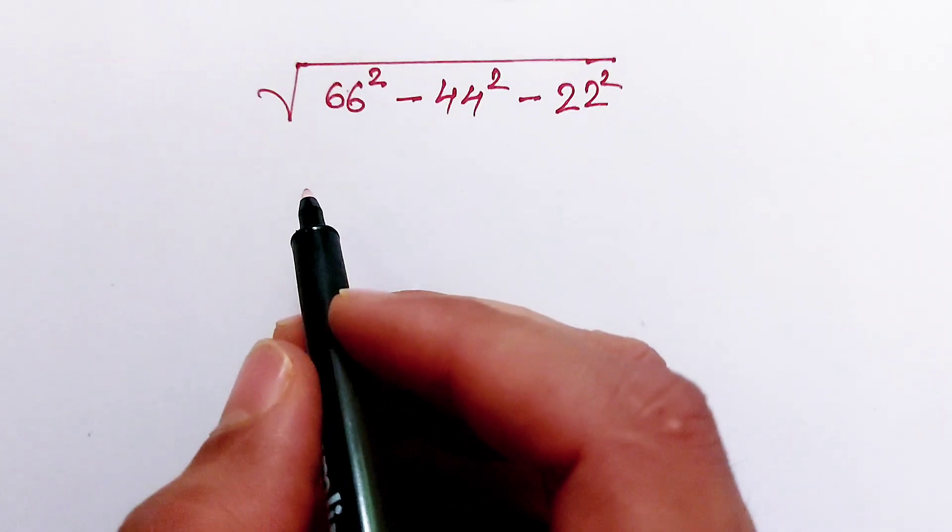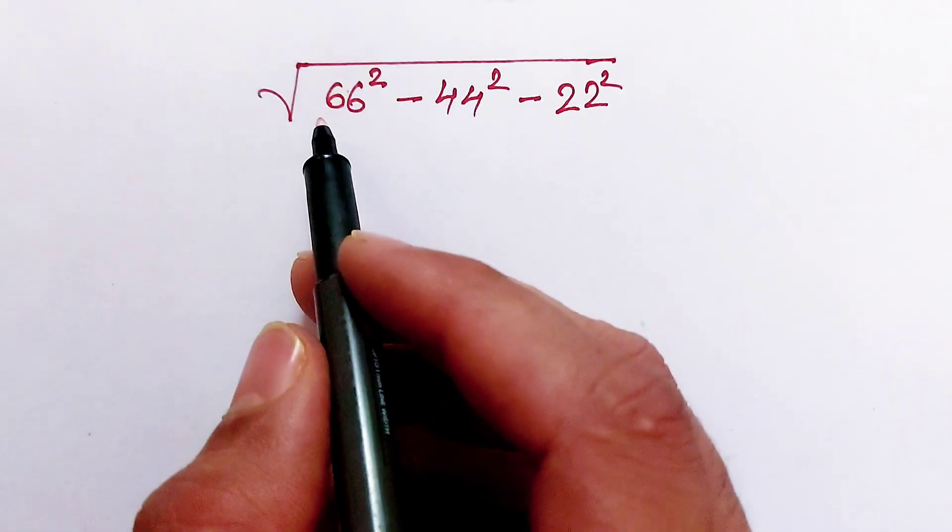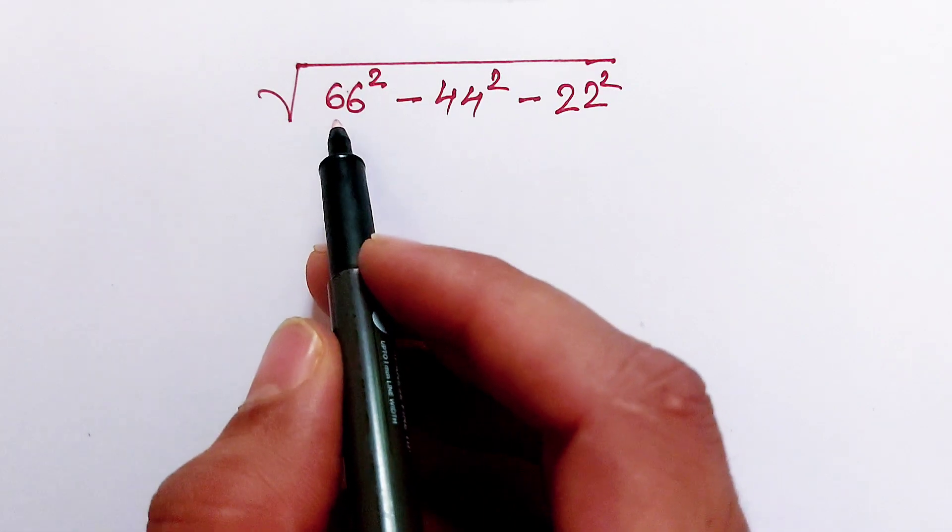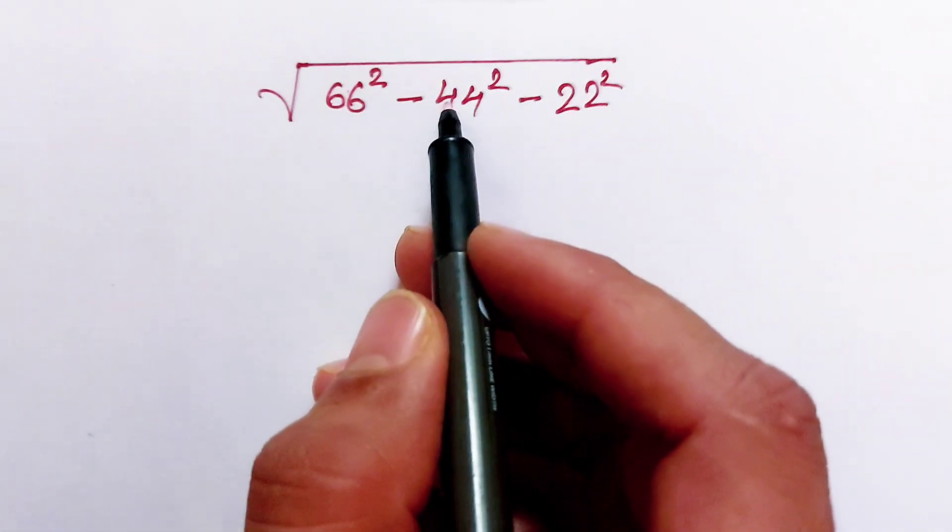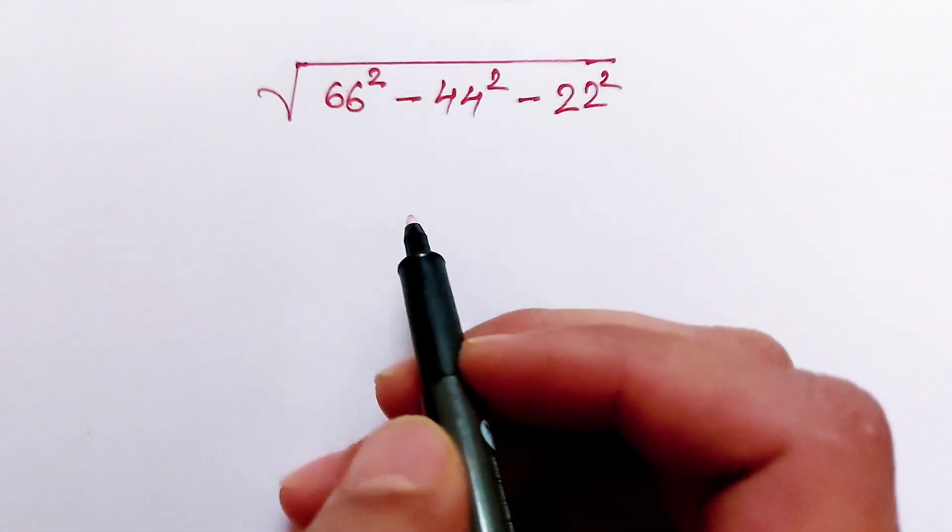Hello, the question is we have to find the square root of 66 squared minus 44 squared minus 22 squared.